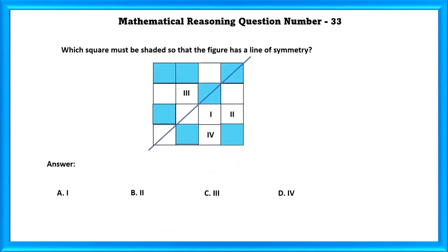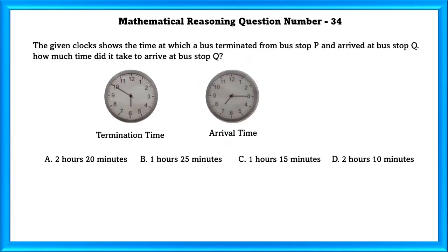Question No. 33: Which square must be shaded so that the given figure has a line of symmetry? The figure is only symmetrical if Roman numeral II is shaded. So our answer is B.